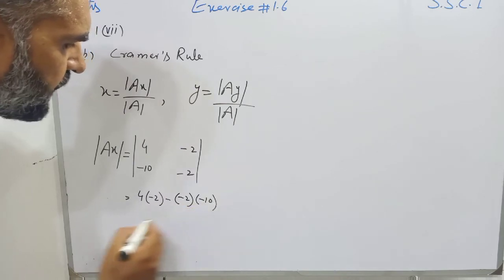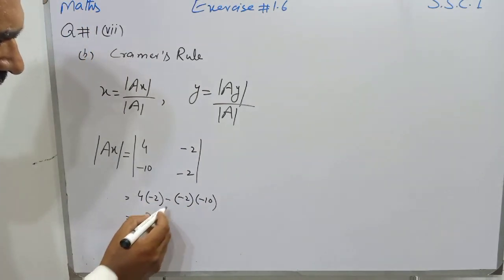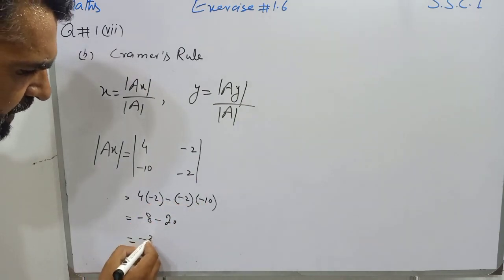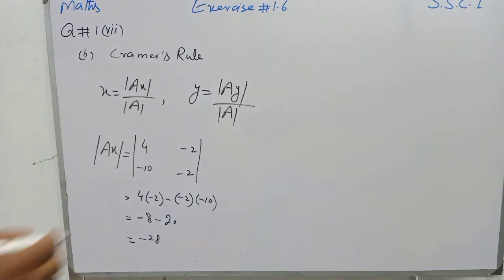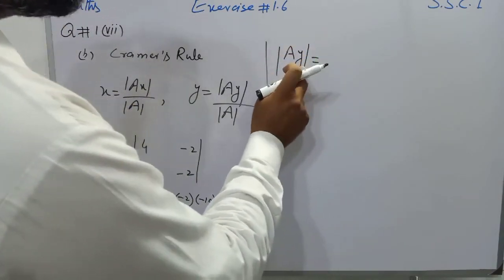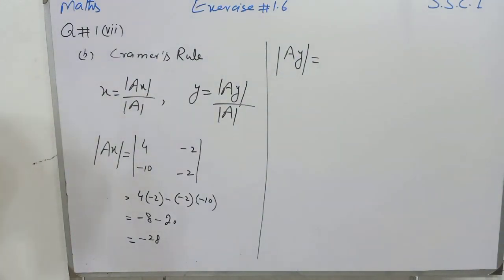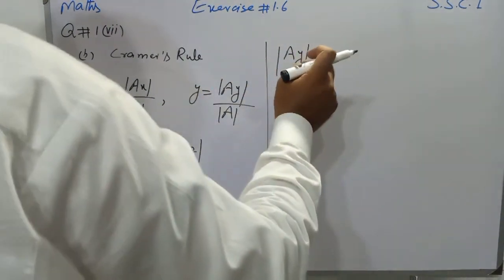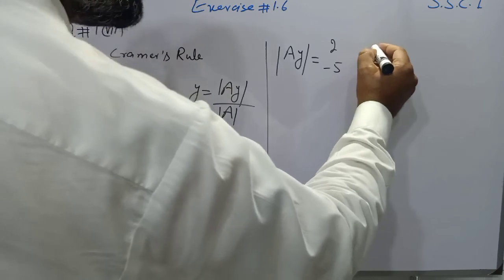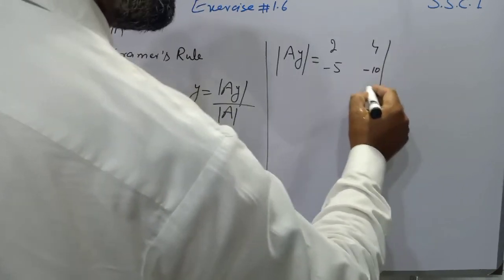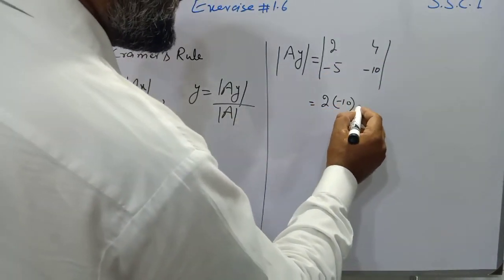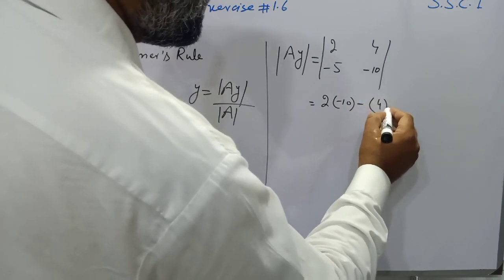We are going to multiply: four times two is minus 8, and minus two times minus ten gives plus 20. So the determinant of Ax is minus 8 plus 20, which gives us Ax determinant equal to minus 28. Now we find the Ay determinant. For the Ay matrix we place the b matrix values — 4 and minus 10 — in the appropriate column, with entries minus 5 and 2, giving us minus 2 minus minus 2.